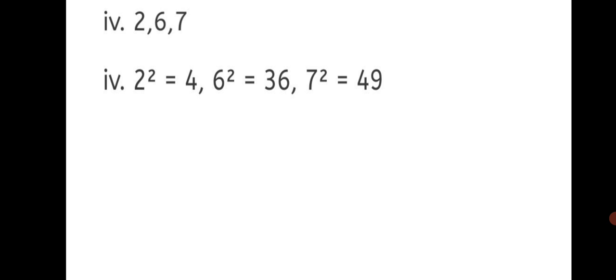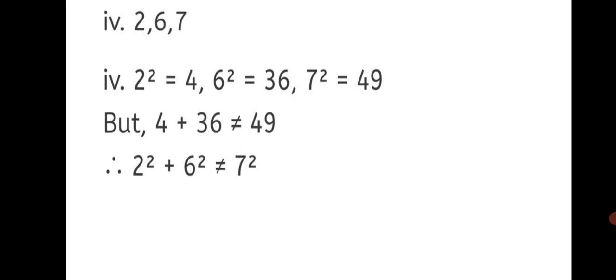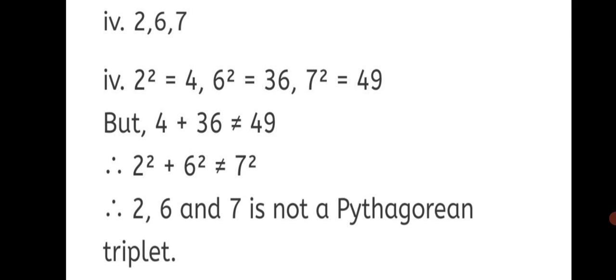Question number 4: 2, 6, 7. The squares: 2 square is 4, 6 square is 36, 7 square is 49. Adding squares of 2 and 6: 4 plus 36 is not equal to 49 — it gives 40. Therefore, 2 square plus 6 square is not equal to 7 square. Therefore, 2, 6, and 7 is not a Pythagorean triplet.